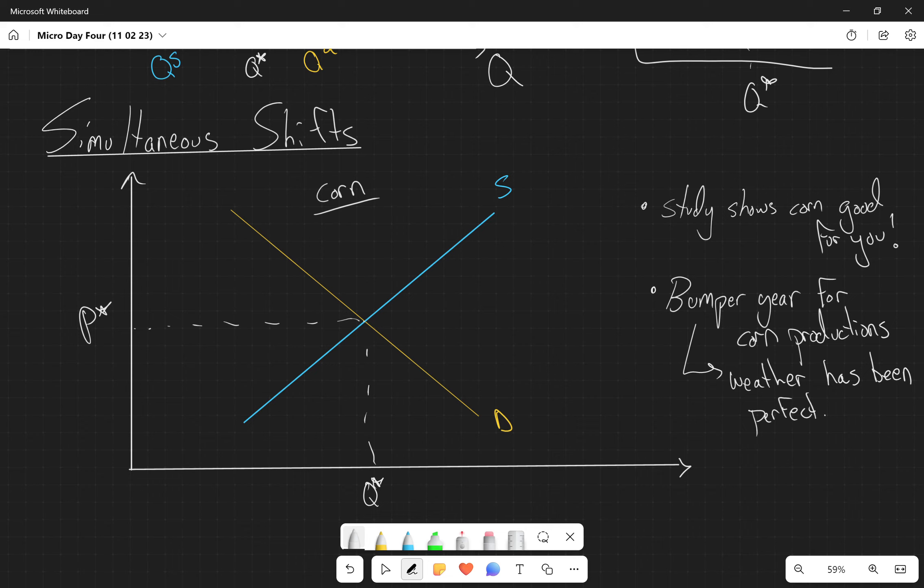So using that four-step process, we're going to have to do it for two different things now. So the first one, when we're talking about the study shows that corn is good for you, we've already done the first part of each process. The second step is we need to figure out, is it affecting demand or supply? Is the study showing that corn is good for you affecting demand or supply? It's affecting demand.